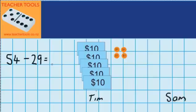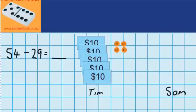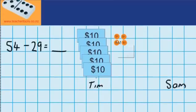We want to find out how much money he has left. Well to start with let's use some materials for this question here. You can see here I've got $54, they all belong to Tim, and over here is Sam.